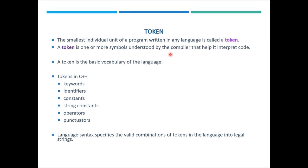So basically, the smallest individual unit of a program written in any language is called a token. That means in any programming language, the smallest unit written in the program is also called a token. A token can be any keyword, identifier, constant, string constant, operator, or punctuator. In any programming language, we use a combination of these tokens.